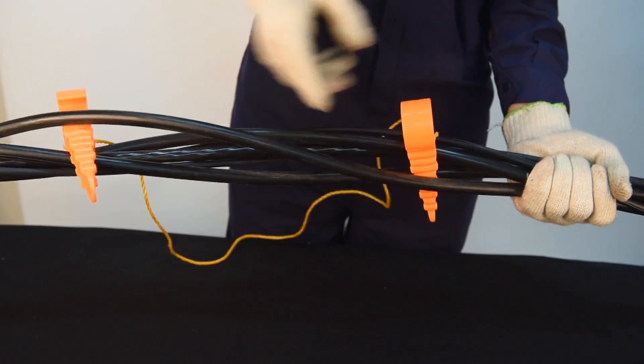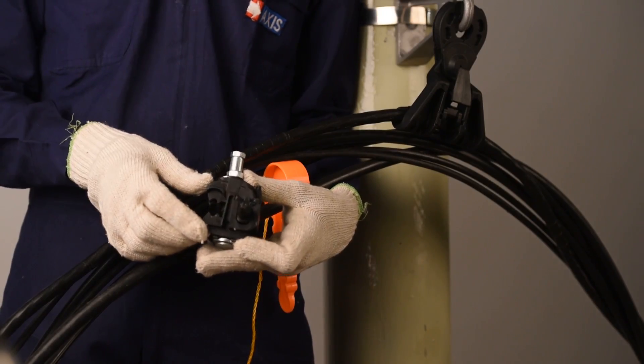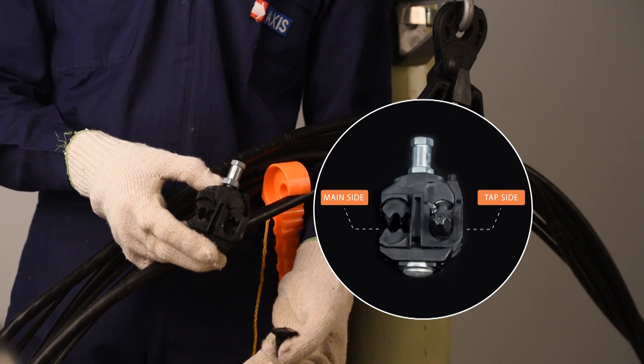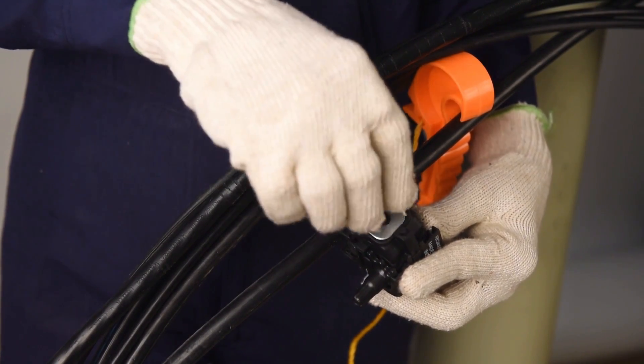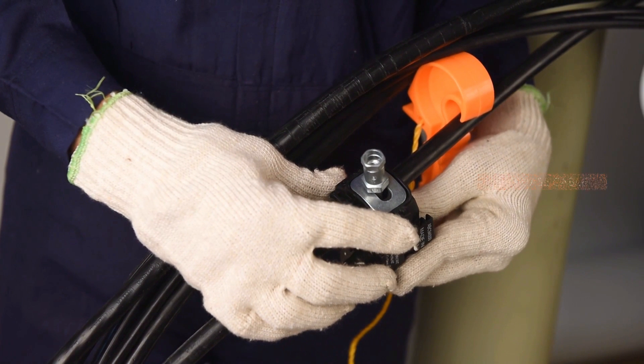Insert the identified cable into the correct slot of the piercing tap, which will be the main side. Loosen the shear nut if necessary in order to accommodate the cable. Note: for three phase, all cables to be tapped.